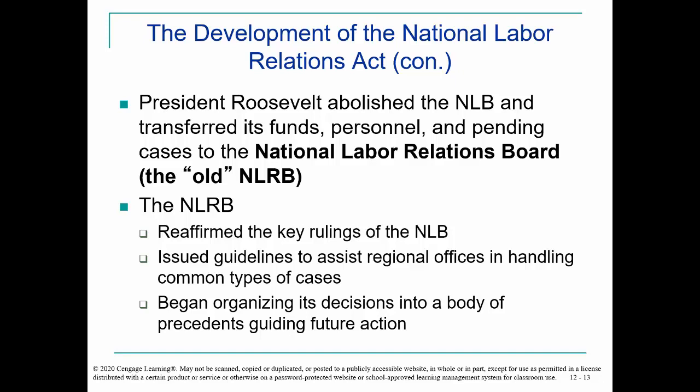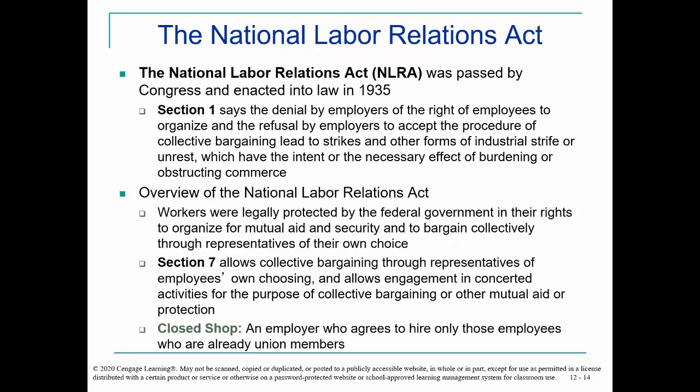The National Labor Relations Act was passed by Congress and enacted into law in 1935 — again, look at the timing. Section one says basically that if employers deny the right of employees to organize and refuse collective bargaining, and it leads to strikes which have the necessary effect of burdening or obstructing commerce, that is a problem. Workers are now legally protected in their rights to organize for mutual aid and security, and to bargain collectively through representatives that they choose. Section seven allows collective bargaining through representatives of the employee's own choosing.